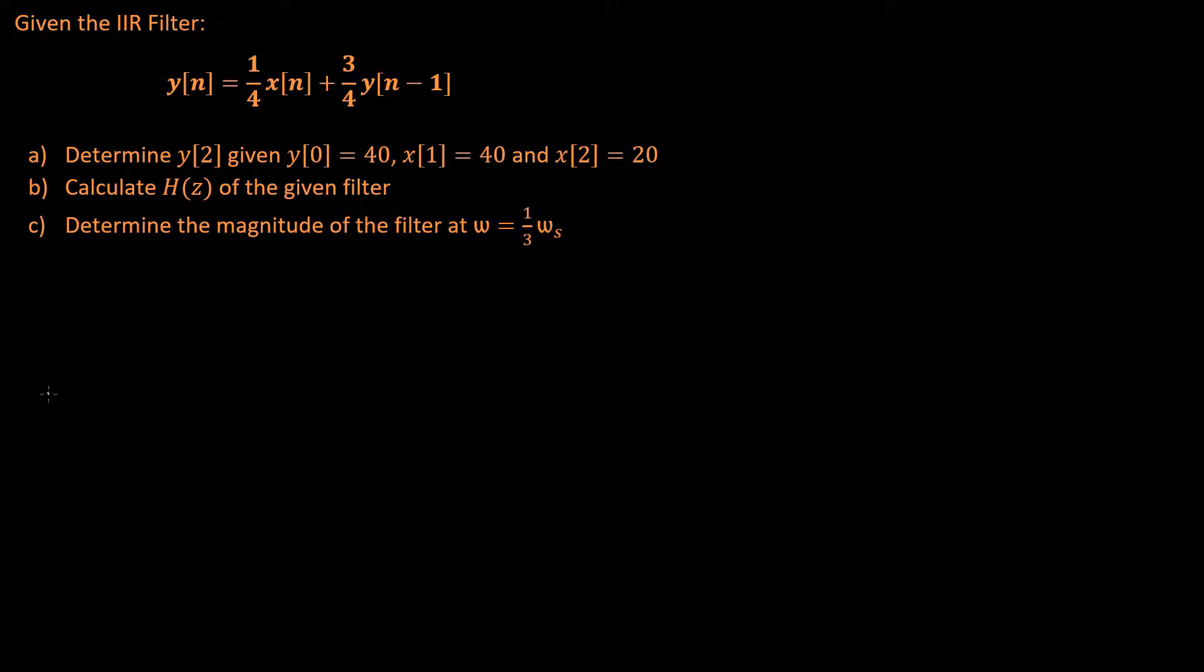Now let's move on to question B. Let's calculate h of z, our frequency response of our given filter. For this, we can use our inverse z transform, which is the same as the one we've used in the past, where a of x of n minus b becomes x of z multiplied by a times z to the power of negative b. We can make that same transformation here and calculate our y of z. After we have y of z and x of z, we can rearrange this to calculate our h of z.